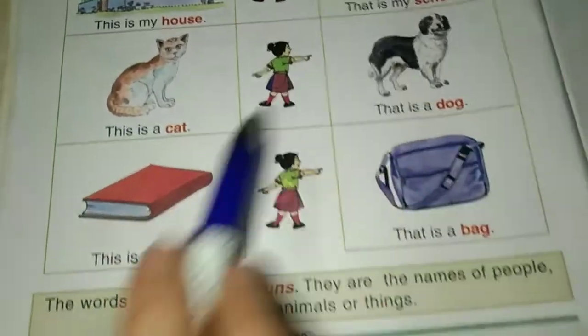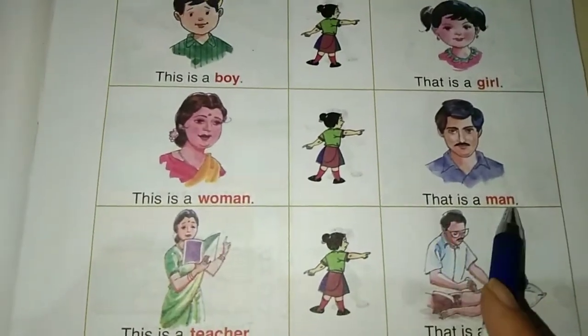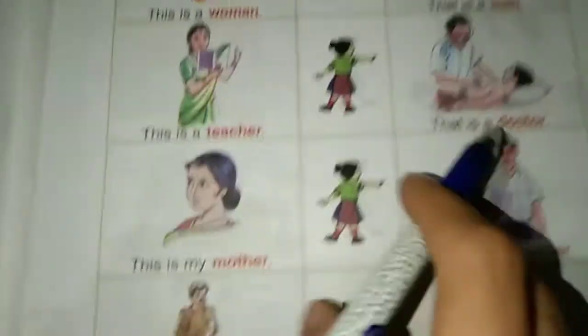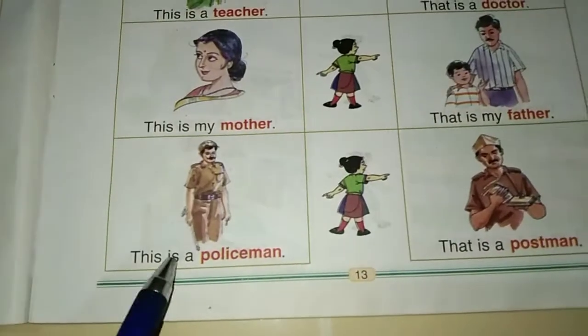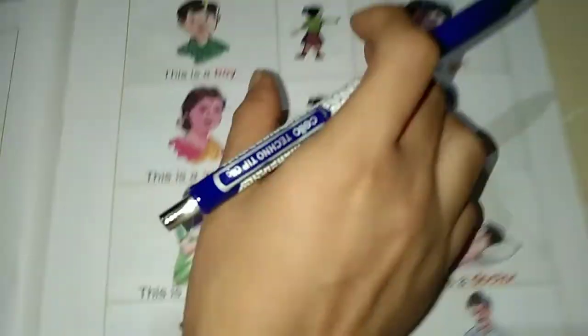Now let us see names of people around us. This is a boy, that is a girl. This is a woman, that is a man. This is a teacher, that is a doctor. This is my mother, that is my father. This is a policeman, that is a postman. So these are names of some people.